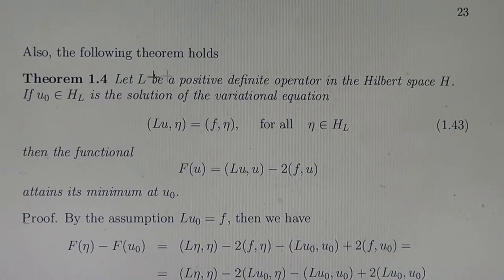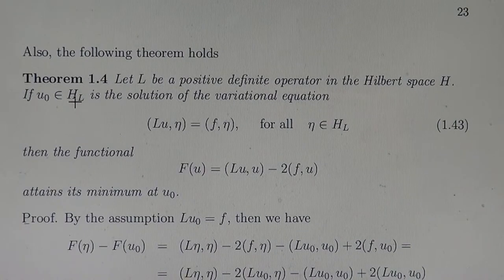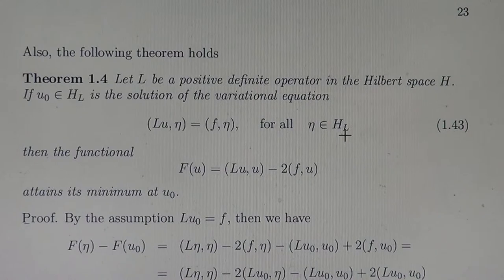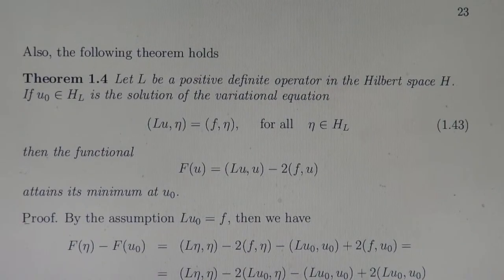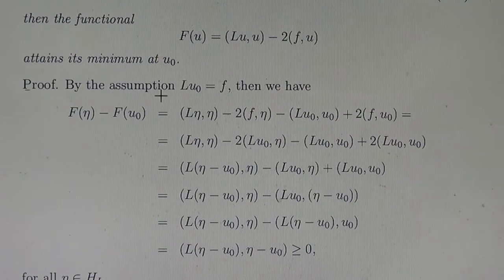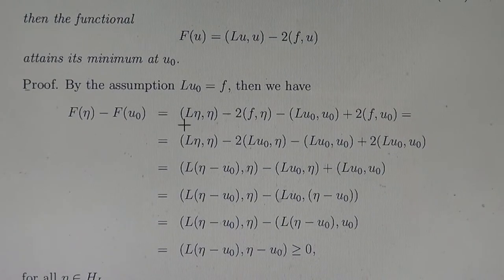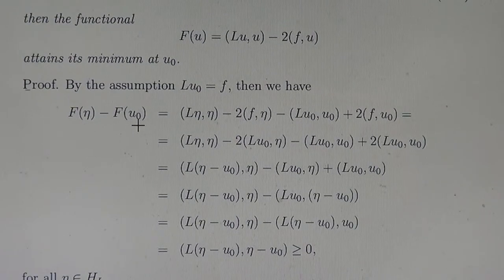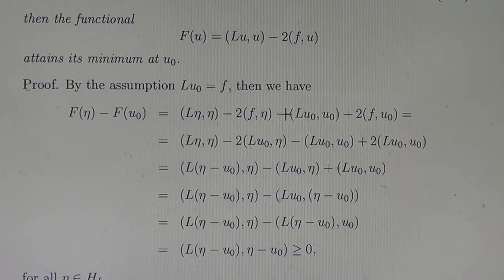The following theorem also holds. Let L be a positive definite operator in the Hilbert space. If U0 in the new Hilbert space H_L is the solution of the variational equation for all eta in H_L, then the functional attains its minimum at U0. To prove this, we assume that U0 is the solution of the abstract equation. Then we compute the difference F(eta) minus F(U0), expressing each term according to the definition of the functional.